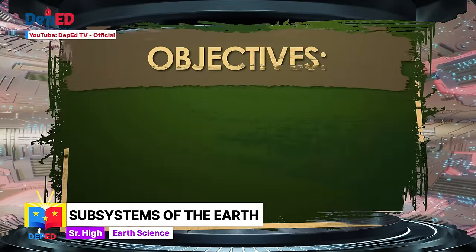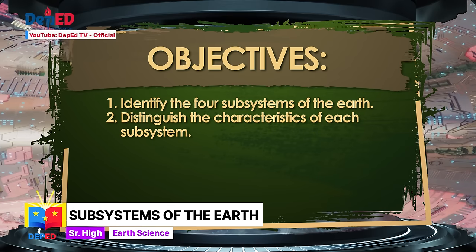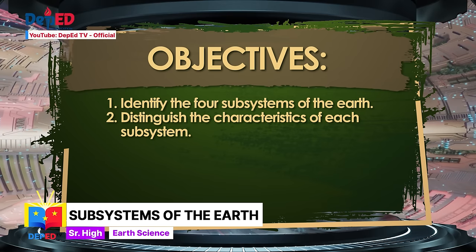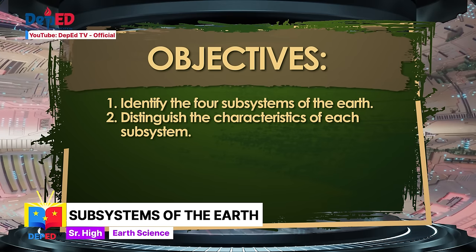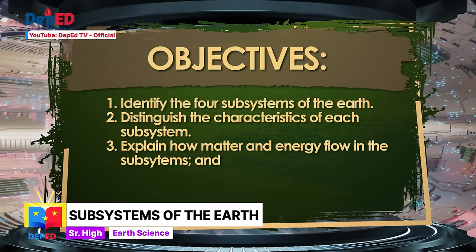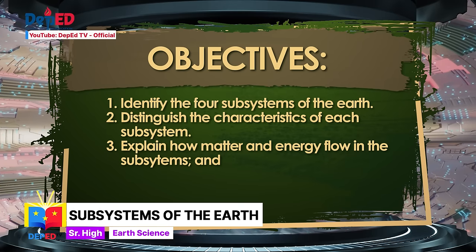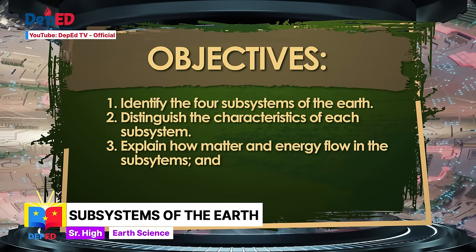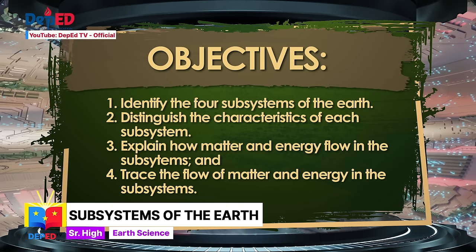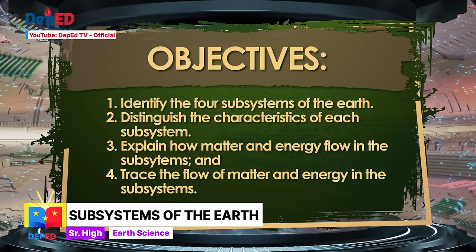The objectives for today's lesson are: identify the four subsystems of the Earth; distinguish the characteristics of each subsystem; explain how matter and energy flow in the subsystems; and trace the flow of matter and energy in the subsystems.